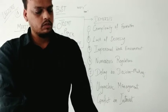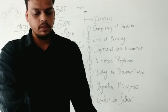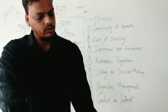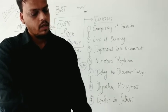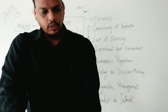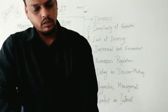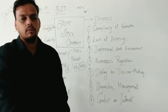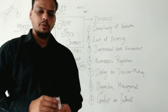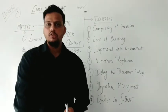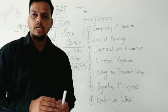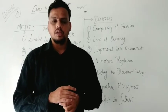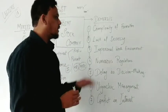Point number three is impersonal work environment. Separation of ownership and management leads to a situation in which there is no direct relationship between efforts and rewards. The large organization of the company makes it difficult for owners and management to maintain personal contact with employees, customers, and creditors. Because ownership and management are separate, no personal relationships are generated, and large organizations face a lot of difficulties. Miscommunication is very common here.